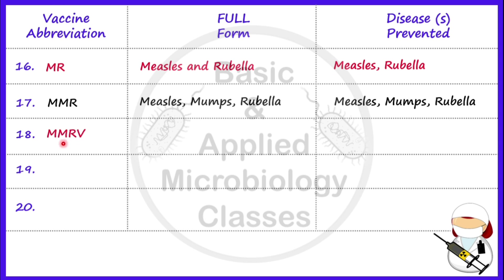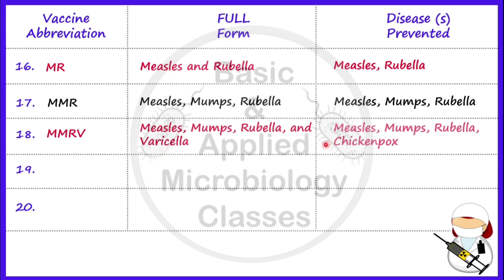Now let's talk about the next vaccine, MMRV. MMRV stands for Measles, Mumps, Rubella, and Varicella. So it provides protection against measles, mumps, and rubella, along with chickenpox.